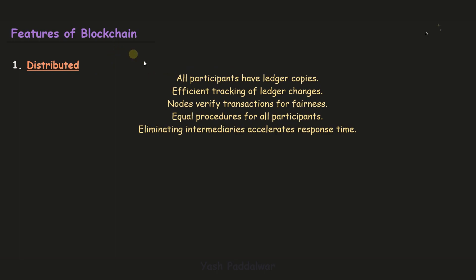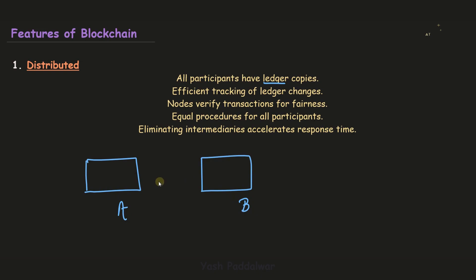As I already told you, every single participant that is involved in the blockchain network will be having the ledger copy with them, and this makes it efficient to track the ledger changes. If any changes occur in a particular ledger which belongs to person A, the same changes will also occur to the ledger which belongs to person B, provided that they both are part of the same network. The nodes verify the transaction for fairness, since this blockchain technology is distributed — that is why the role of every single node in verification of the transaction takes place, making it a fair play for every single node present inside the pool of transactions.